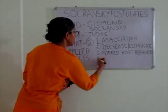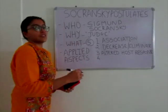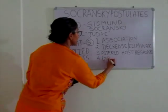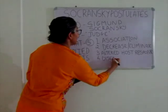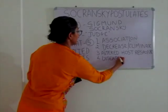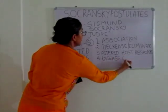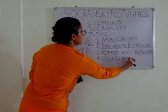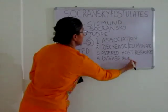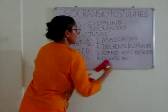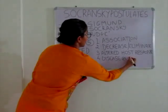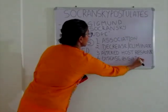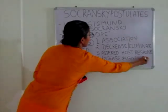Whereas the 4th postulate is disease production. This is the key difference between the first three postulates and the 4th postulate — this 4th postulate is based on experimental animal models. The microorganisms must be able to cause the same disease in experimental animal models.